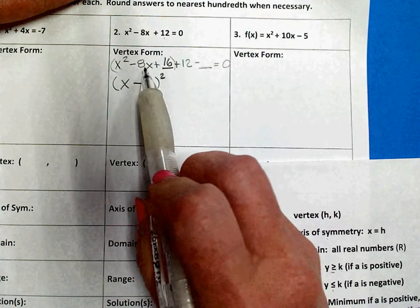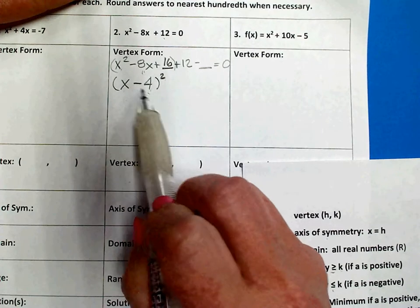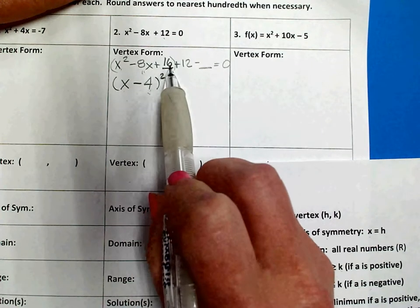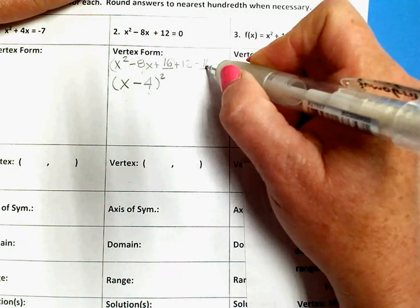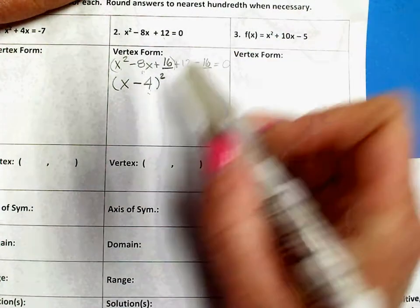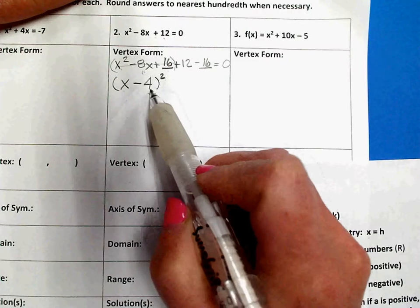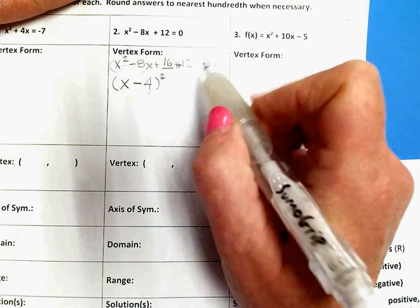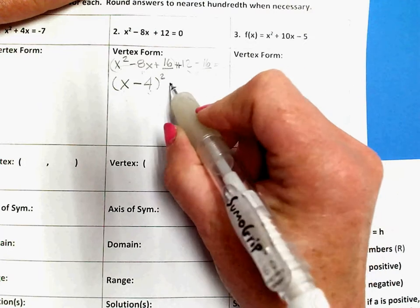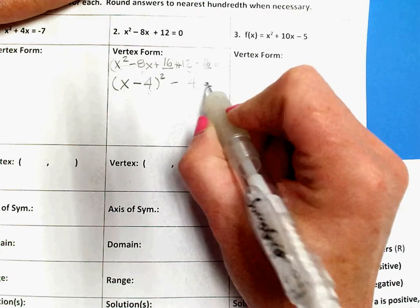And now, if you factor this, this is what you will get. I can't just randomly add this 16 unless I offset it by subtracting 16. So, these three are here. This positive 12 and negative 16 are like terms. They add up to negative 4, and it's equal to zero.